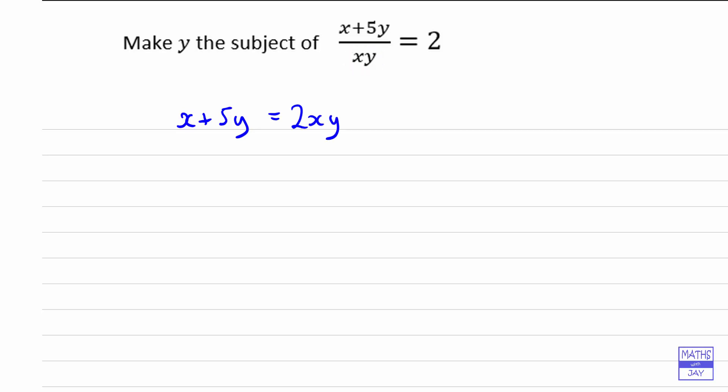And then we want to get the y on its own. So first of all we need to have both terms involving y on one side. So let's subtract 5y from both sides. We'll have 2xy minus 5y on the right hand side and just x on the left hand side.